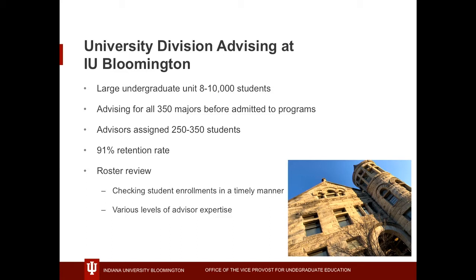Retention is very high at our institution — typically about 91% of our students succeed and continue on. So we have a smaller population that is at risk. One of the things we do in advising is something called roster review, where we review all 350 students on our roster and try to figure out who we need to contact between the time that grades have been finalized and when they're enrolled in classes — looking at whether they need to change their schedule or need certain resources.